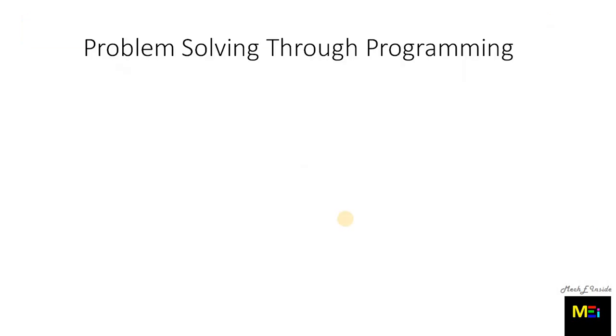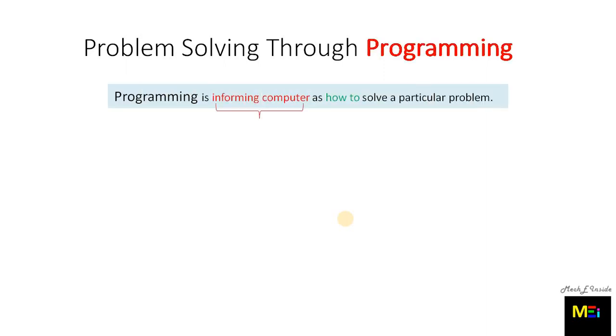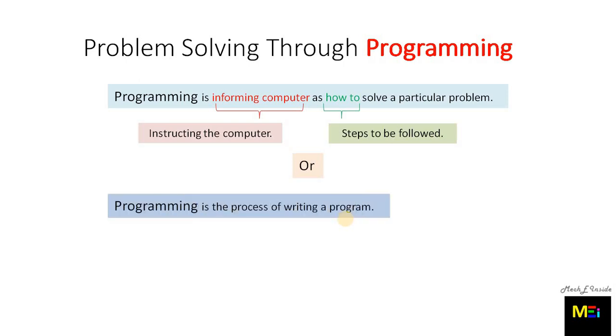Now let's come on, what is programming? Programming is informing computer as how to solve a particular problem. Informing computer means instructing the computer. How to solve a particular problem means steps to be followed. Or, programming is the process of writing a program.